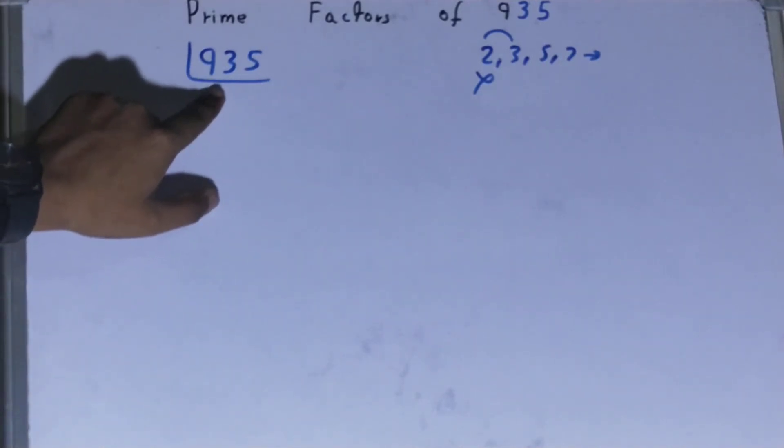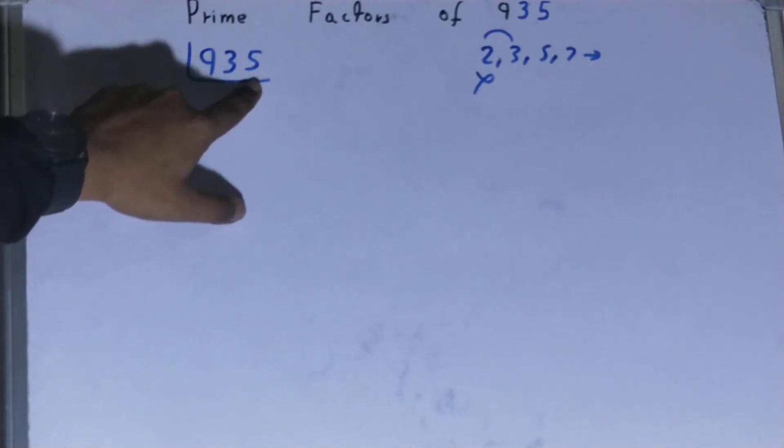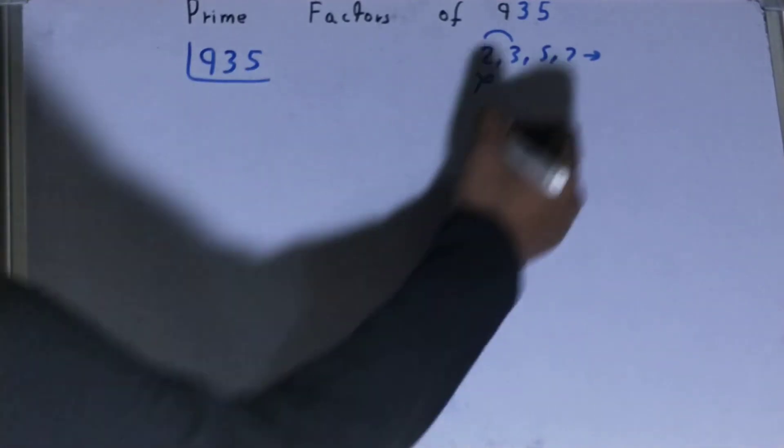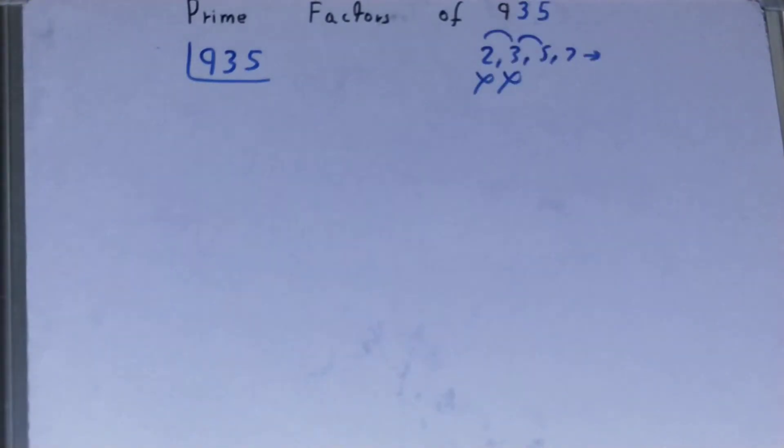Let's check. 3 times 31 is 93, 3 times 1 is 3, two left. No, it is not divisible by 3. Let's check it with 5. The last digit is 5, so yes, it is divisible by 5. So divide it.